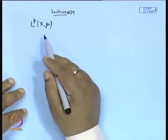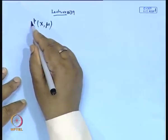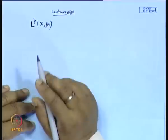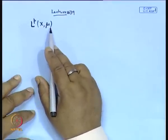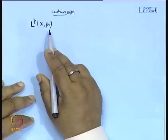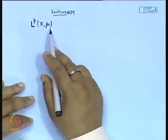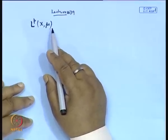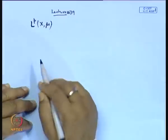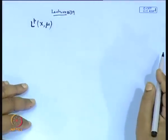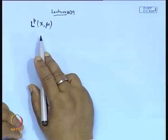Today we will discuss the space L^p(X, mu), where X is an arbitrary set and mu is a measure. This space L^p consists of measurable functions which are p-th integrable. It requires knowledge of measure theory: what are measurable functions, what is a measure, and how to introduce the concept of sigma algebra. Before proceeding, let us see the concepts needed to discuss this space.